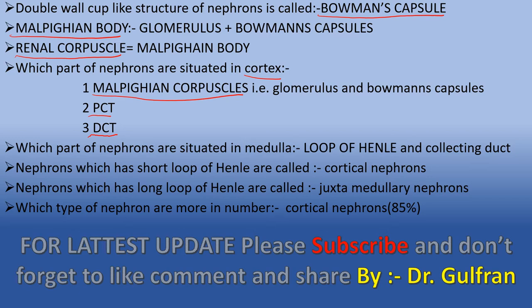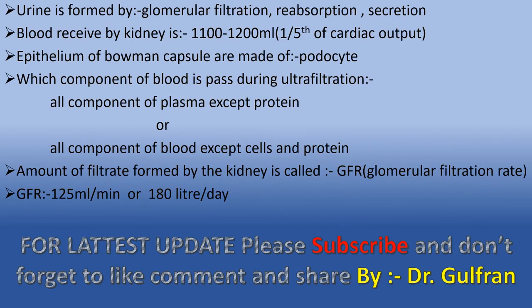In the medulla, the loop of Henle and collecting duct are present. Nephrons with a short loop of Henle are called cortical nephrons, and nephrons with a long loop of Henle are called juxtamedullary nephrons. Cortical nephrons are more in number — 85% of nephrons are cortical nephrons and 15% are juxtamedullary nephrons.